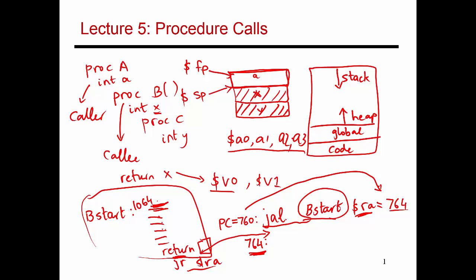When you're supposed to return, you know where to return because that address has been stored in $RA. The return instruction takes the form JR $RA — JR is an instruction that says jump to whatever address is in the following register. So $RA says 764, and once this instruction is executed the PC is set to 764, and the next instruction executed is the one right after the jump and link. The compiler does not know beforehand where to return to, so at runtime by executing jump and link, you keep track of where to return, and JR $RA transfers control back to the instruction right after the procedure call.